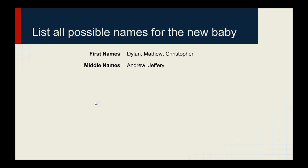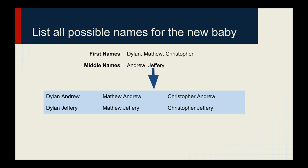Let's take a look at our first example: list all of the names for the new baby. We're going to choose three possible first names — Dylan, Matthew, and Christopher — and two possibilities for the middle name: Andrew and Jeffrey. So we have our five names. What are all possible combinations? We've got six possibilities.